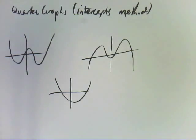They can also look like a plain old parabola. The same thing applies. Now, 3i is talking about quartic intercept methods. The way this works is very similar to cubics.